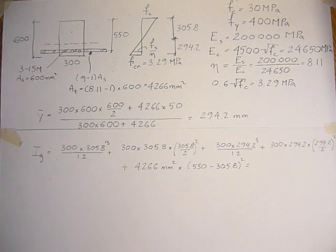Okay, let's calculate it out. It's 300 times 305.8 cubed divided by 12, plus 300 times 305.8 times 305.8 over 2 squared,